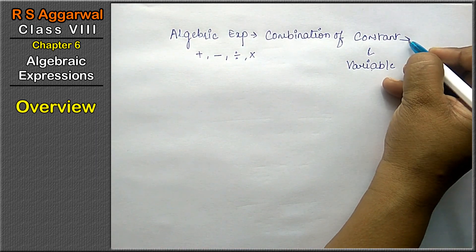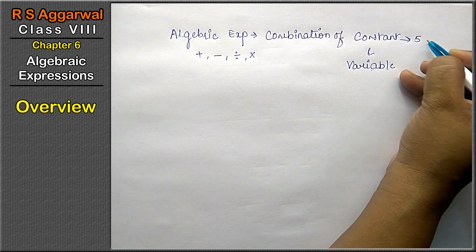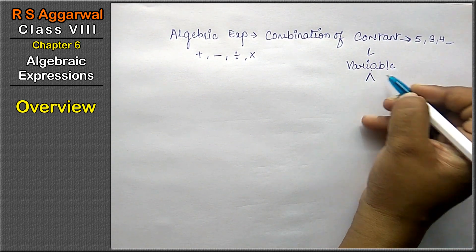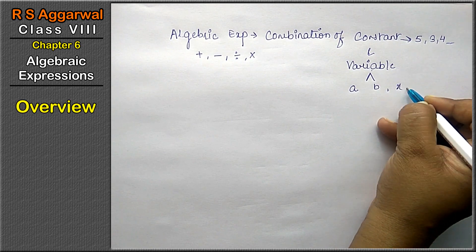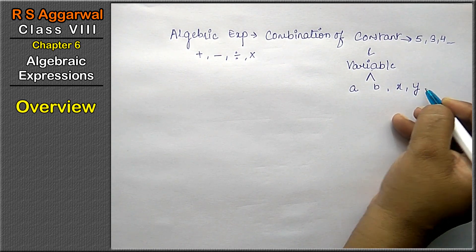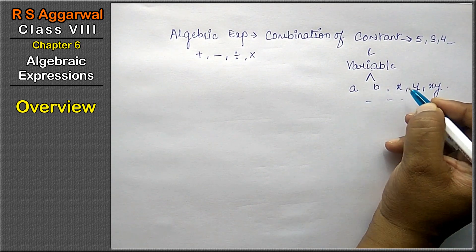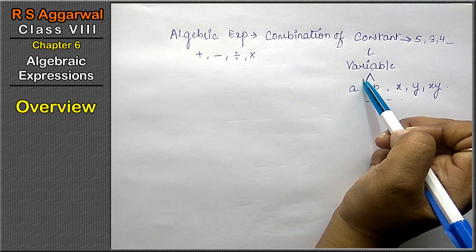Now what is constant? Constant is like any numerical value like 5, 3, 4, any numerical value. And what is variable? Variable is maybe a, b, x, y, xy. This is the combination of constant and variable.